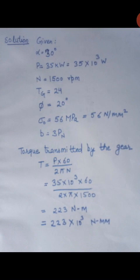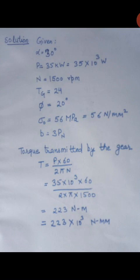Now we will write down the parameters given in the question. Alpha, helix angle, is 30 degrees. P, power transmitted by the gear, is 35 kilowatt, equal to 35 into 10 raised to the power 3 watts. N, rpm of the gear, is 1500 rpm. Tg, number of teeth on the gear, is 24. Phi, pressure angle, is 20 degrees. Sigma naught is 56 megapascal, equal to 56 Newton per mm squared — this is the static stress for the gear material, which is cast steel.